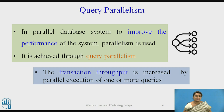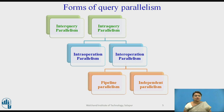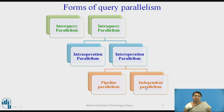There are basically two types of query parallelism: interquery parallelism and intraquery parallelism. Intraquery parallelism is further divided into intraoperation and interoperation parallelism. And interoperation parallelism is again divided into pipeline parallelism and independent parallelism. We are going to see all of these one by one in detail.